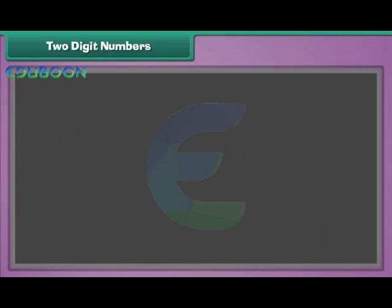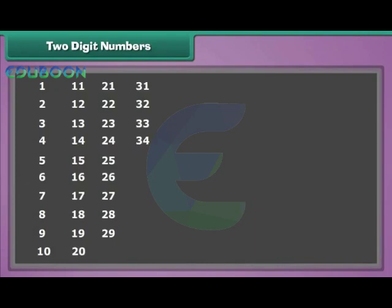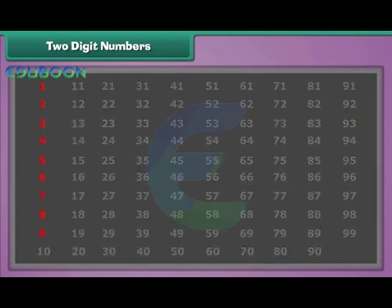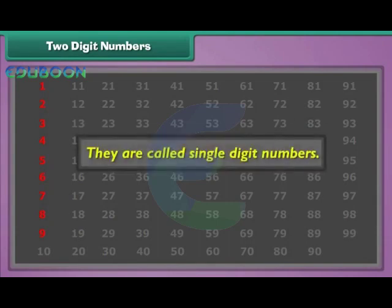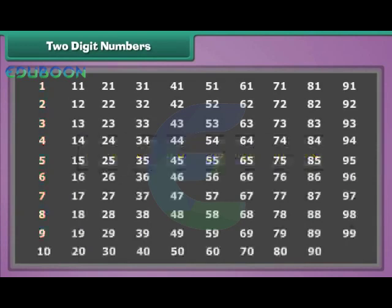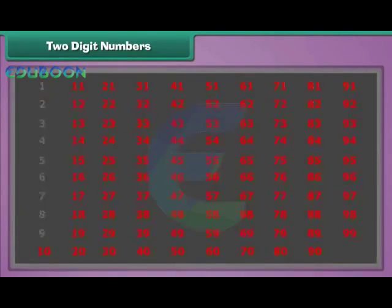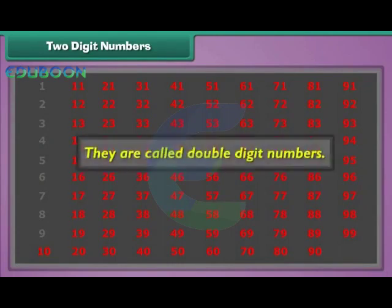Two-digit numbers. The numbers from one to nine have only one digit each; therefore, they are called single-digit numbers. The numbers from ten to ninety-nine have two digits each; therefore, they are called two-digit or double-digit numbers.